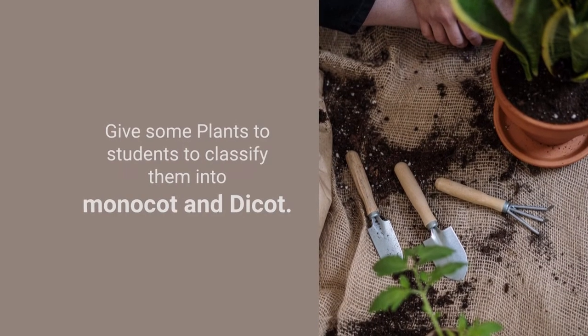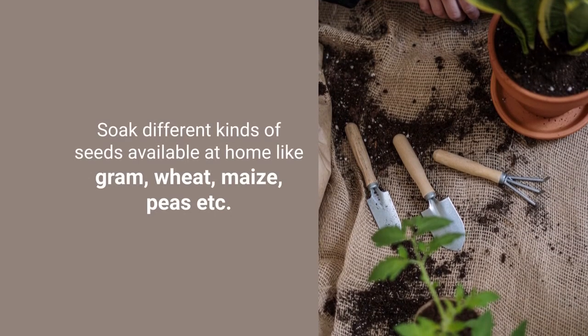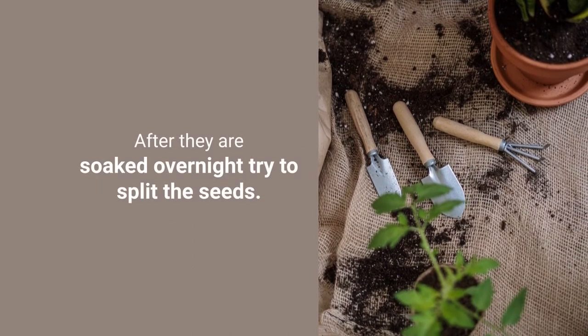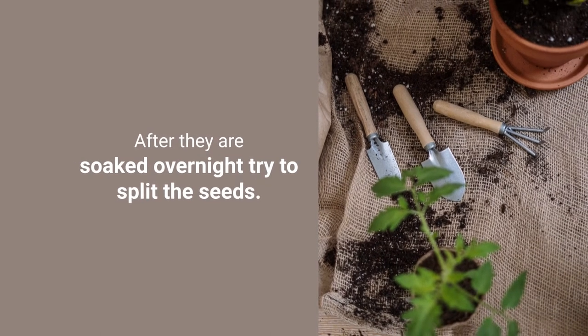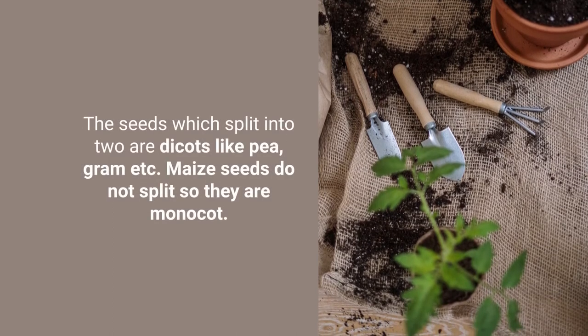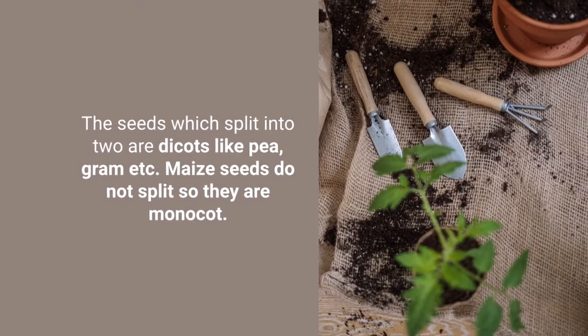You can give students plants to classify into monocots or dicots, or ask them to do a small activity: soak different kinds of seeds available at home — gram, pea, maize, beet — overnight. Then ask them to try to split the seed. Seeds like pea and gram can be split into two, as they are dicots, but maize cannot be split because it is a monocot with no two cotyledons. This introduces the concept of cotyledons, which students already know from elementary school, now as a new criterion for plant classification.